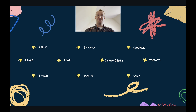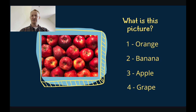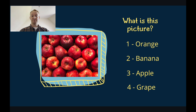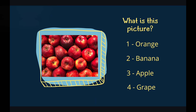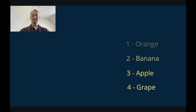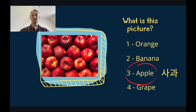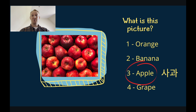Okay, let's get into our first question. What is this a picture of? Is it an orange? Is it a banana? Is it an apple? Or is it a grape? You've got 10 seconds to answer. The answer is apples. There are many apples in this picture. These apples are red. Apples are delicious.